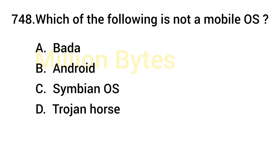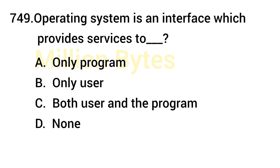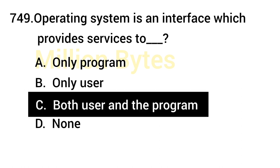Which of the following is not a mobile operating system? The answer refers to one specific option that is not a mobile OS. Operating system is an interface which provides services to both the user and the program.